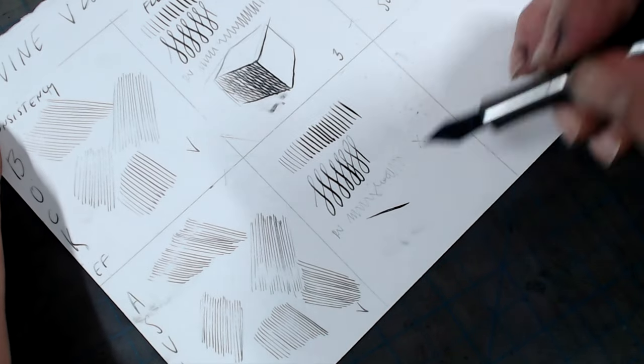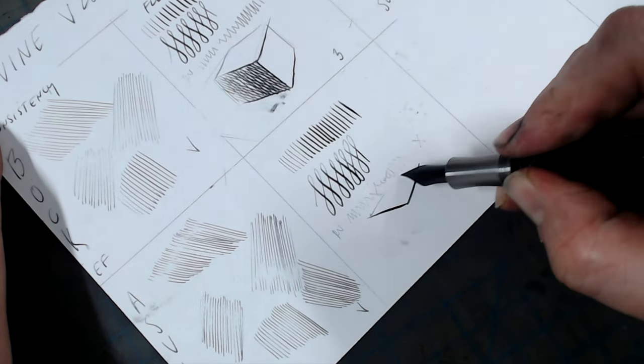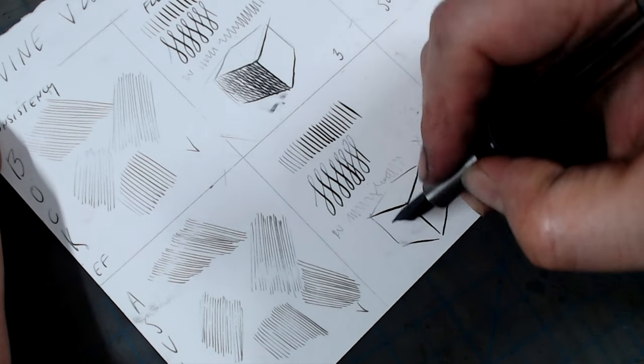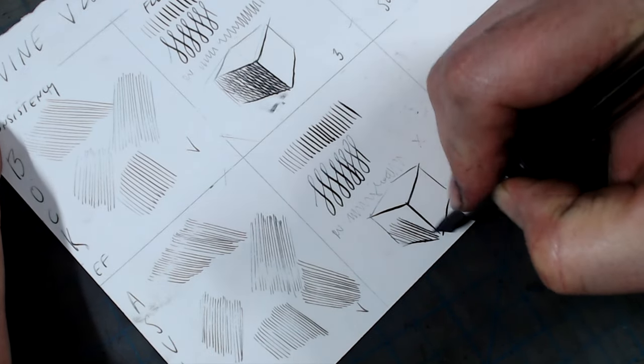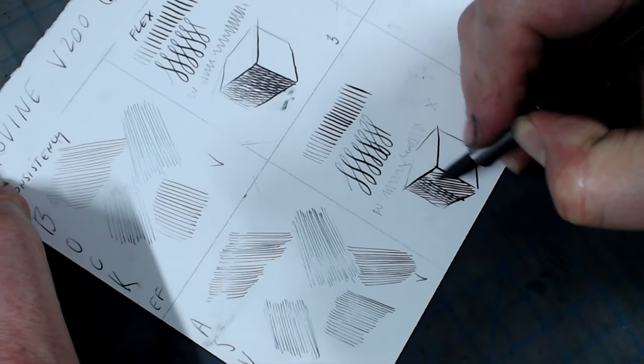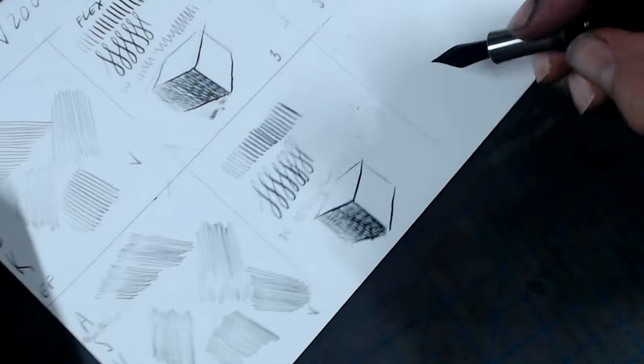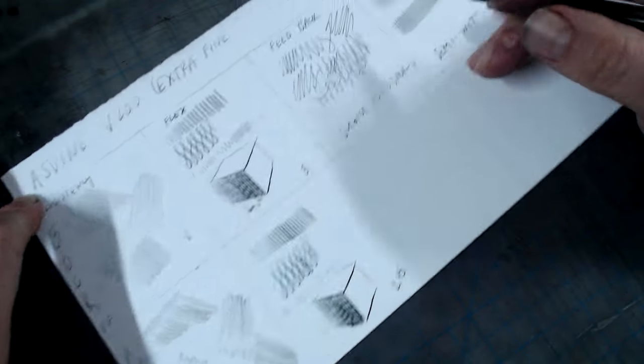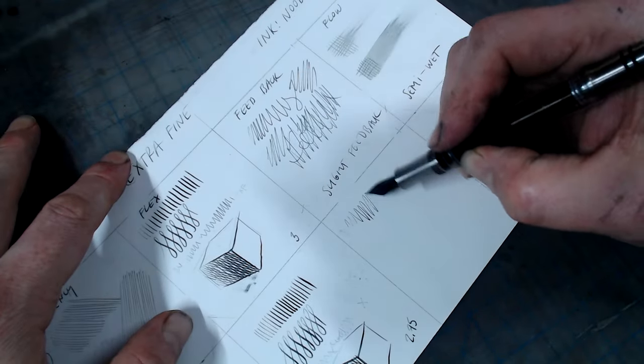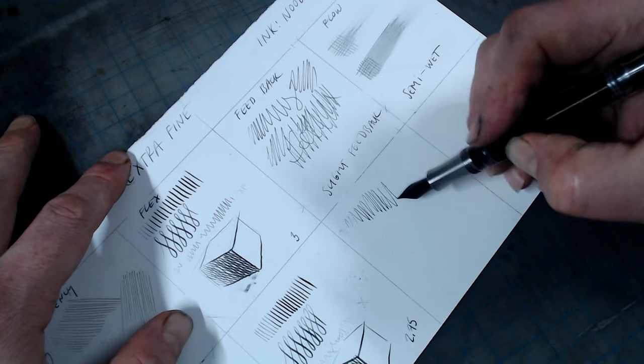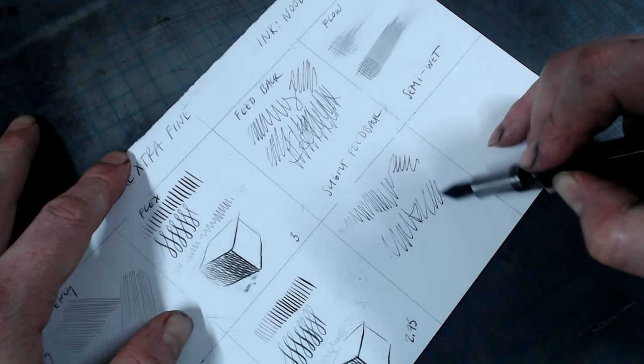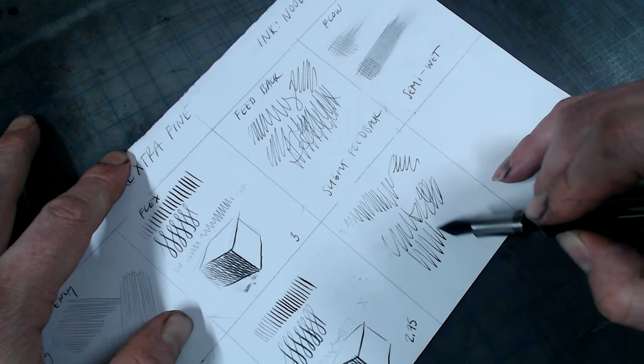In reverse writing, however, it was too scratchy to use. So in my line variation rating, while ultimately the line variation was similar to the Bock, I knocked it down a quarter of a point for the additional pressure required, earning this nib a 2.75. In the feedback test, this nib is slightly scratchier than the Bock, nothing unpleasant, but definitely noticeable. And in the wetness test, the nib was identical to the Bock, which is no surprise since the feed it uses is the same.